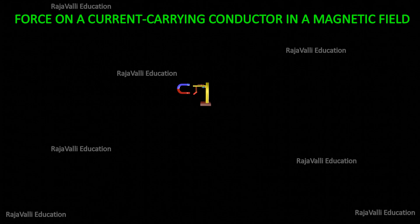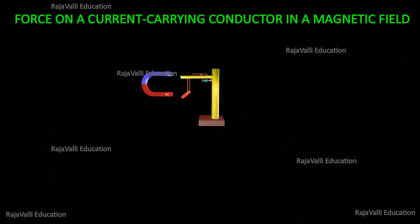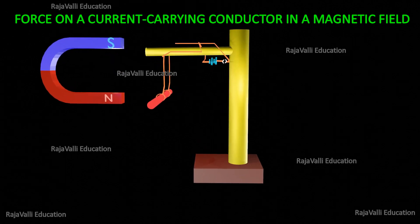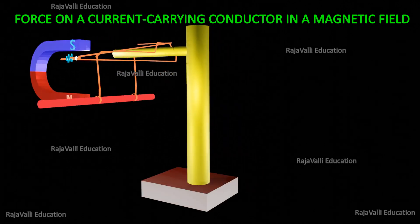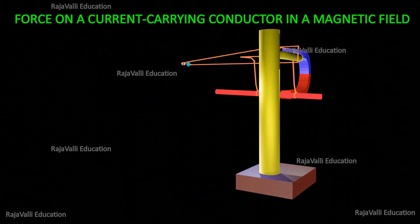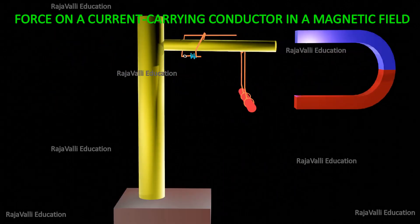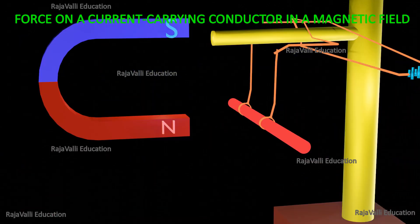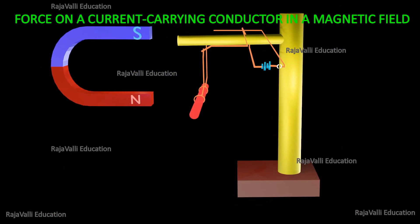Hello friends, welcome to Rajavali Education Channel. Here we are going to see one topic taken from 10th NCERT Science, Chapter 12: Magnetic Effects of Electric Current. The topic is force on a current-carrying conductor in a magnetic field.